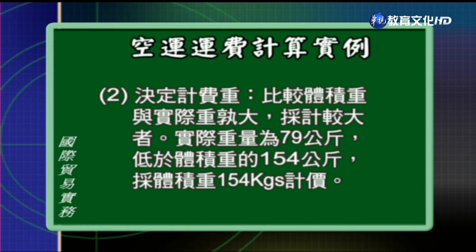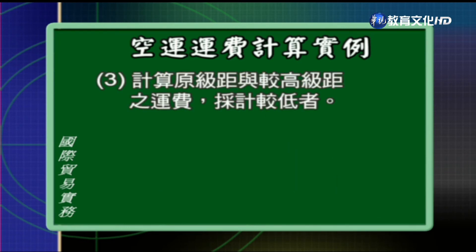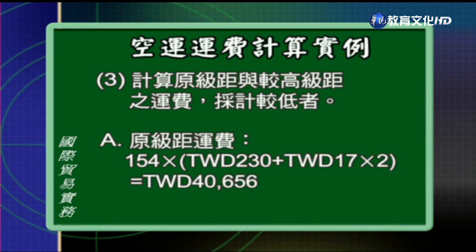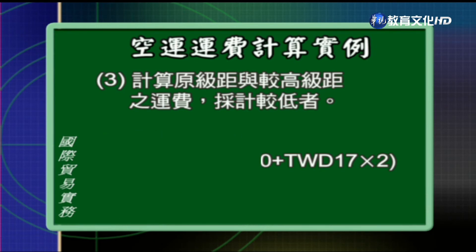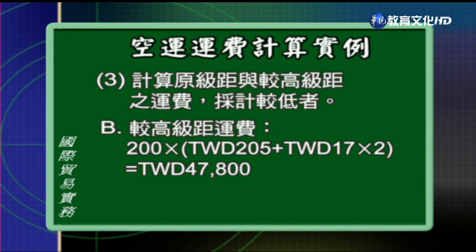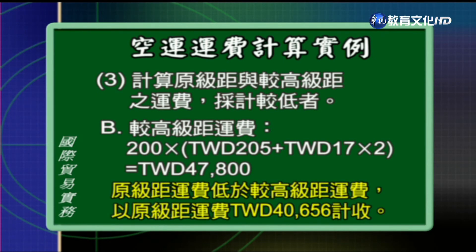假设有一批货物重量是79公斤，总材积是125公分×82公分×90公分。第一步计算体积重，算出来的结果是154公斤。第二步决定计费的重量，因为体积重154公斤比实际的重量79公斤还要重，所以采用154公斤。第三个步骤计算原级距跟较高级距的运费，采取比较低的。原级距用154公斤乘上运费费率，算出来是台币40,656元。假设如果重量能够高达200公斤，用200公斤去算运费是台币47,800元，所以相较起来以原级距来计收运费比较便宜。